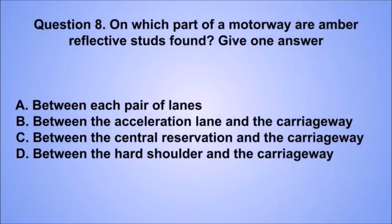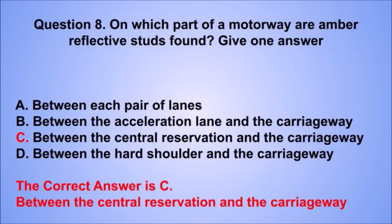Question 8. On which part of a motorway are amber reflective studs found? The correct answer is C: Between the central reservation and the carriageway.